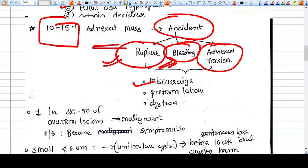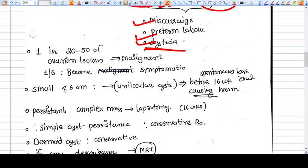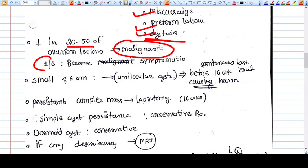One in 20 to 50 of the ovarian lesions are malignant. One in six become symptomatic, rest are asymptomatic.